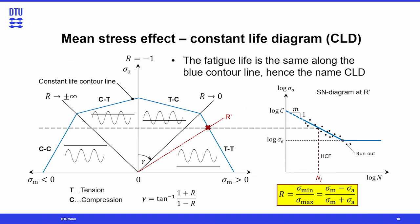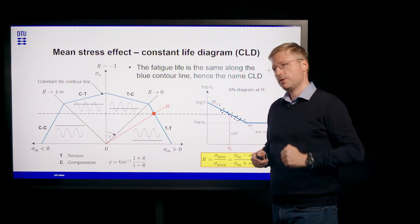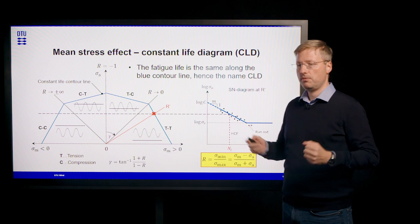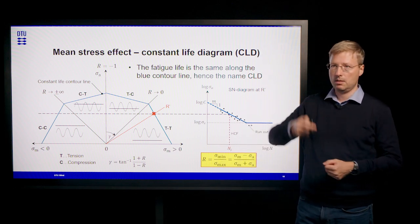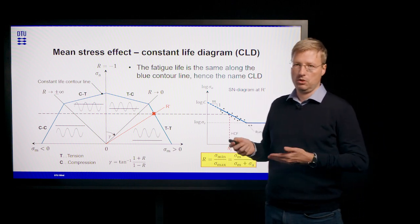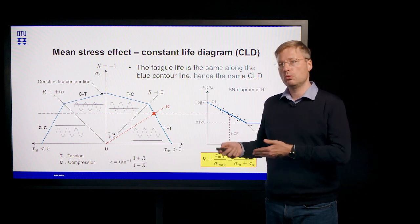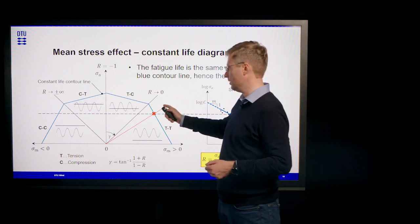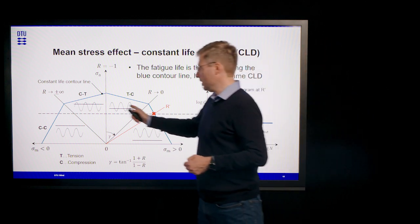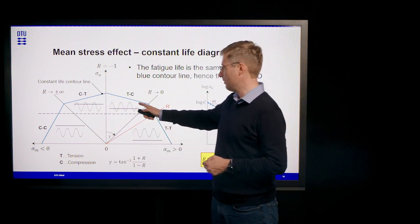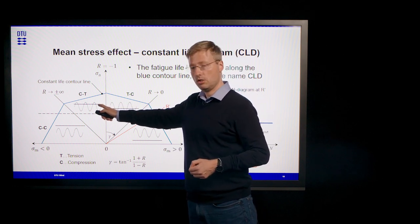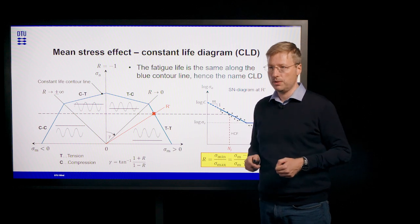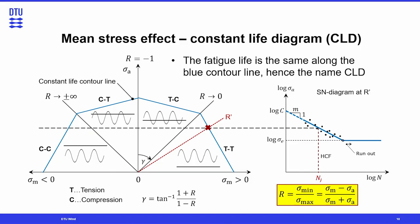The SN curve only reflects the amplitude or range, but we also have the mean stress value, which has an effect on fatigue life. It is clear that if we test a material at a higher mean stress, we should expect a shorter fatigue life. In order to account for this, we need to produce many SN curves at different mean stress values, which is reflected in the so-called R ratio. We can have four regions: tension-tension, tension-compression, compression-tension, or compression-compression — where the mean stress is always in the negative part, so the whole signal is in compression.